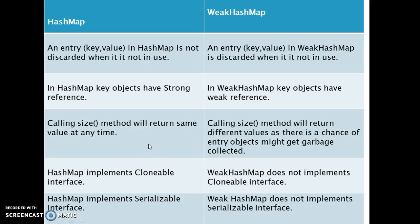Third difference: in HashMap, calling the size() method will always return the same value at any time. But in WeakHashMap, if a key is not in use, the entry gets discarded and garbage collected, so the size() method may return different values over time.